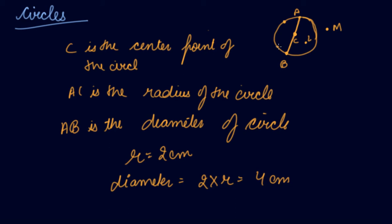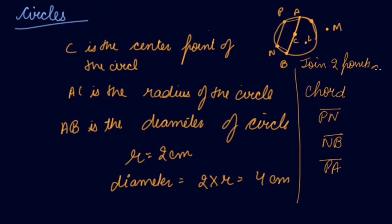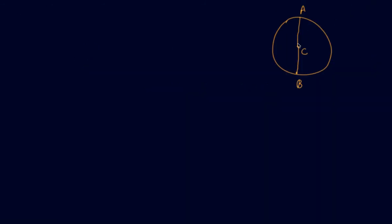Now, if I join two parts of the circle and name them P and N, this part of the circle connecting two points — any points I take on the circle, like P and A, or N and B — these are known as the chords of the circle. PN is a chord, NB is a chord, PA is a chord. So a chord is a line that joins two points on the circle.